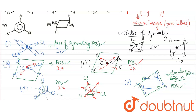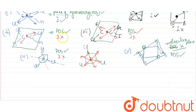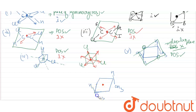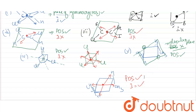Now for the center of symmetry of compound five: taking the center of the structure — going upward we have H, going down we have H again; going this side we have CH3, going the opposite direction we also have CH3. So center of symmetry is also present. Both POS and center of symmetry are present in compound five.